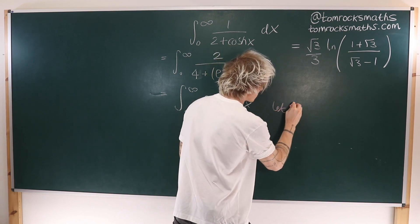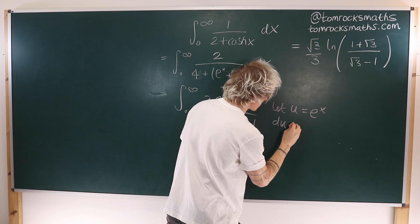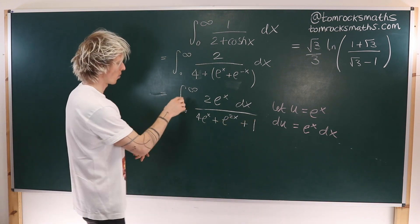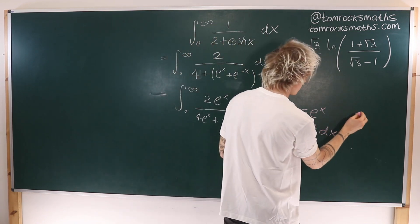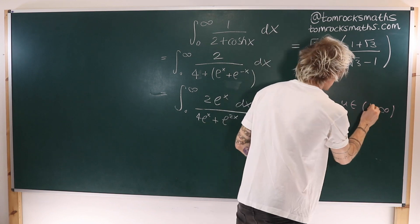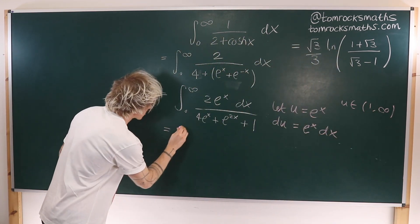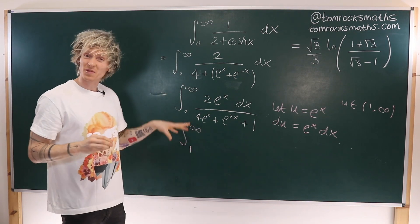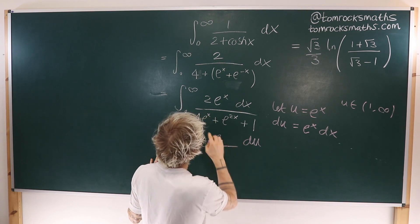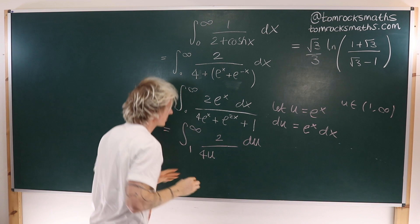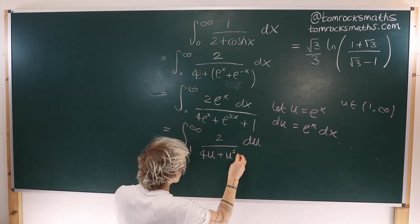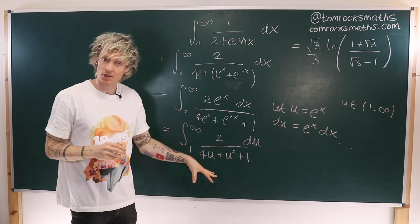If we let u equal e to the x, then differentiating, du/dx is e to the x so du is e to the x dx. For the limits: when x is infinity, u goes to infinity as well, and when x equals 0, u equals e to the 0 which is 1, so u goes from 1 to infinity. Making that substitution, the numerator is just 2 du, and the denominator becomes 4u plus u squared plus 1 — a quadratic function of u.